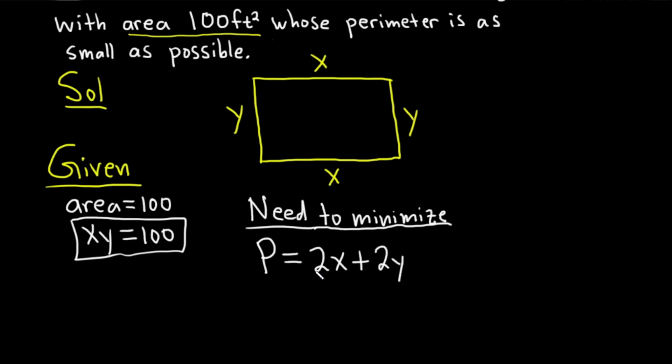But this is a function of two variables. And at this point in time, we don't really know how to minimize functions of two variables. So what we're going to do is we're going to use our condition xy equals 100 to make it a function of one variable.